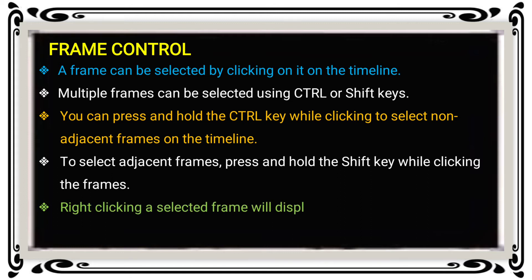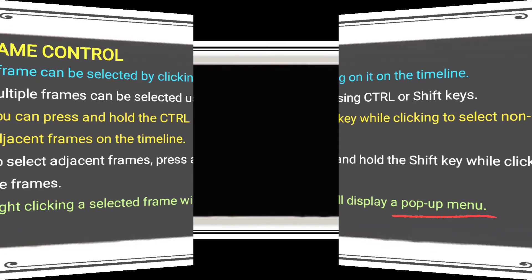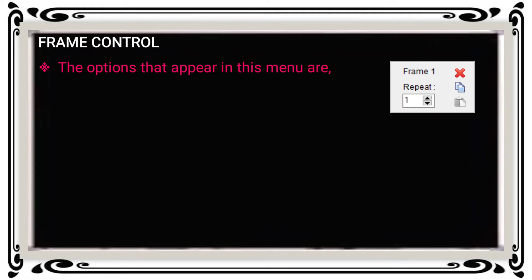Right-clicking on selected frames will display a pop-up menu. For example, if you select one frame and right-click, the pop-up menu shows the available options. These options are covered one by one in the frame control options.